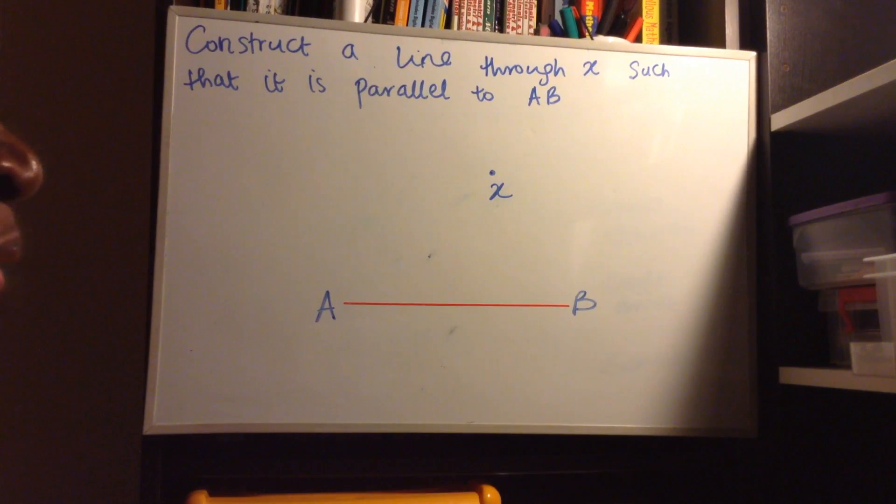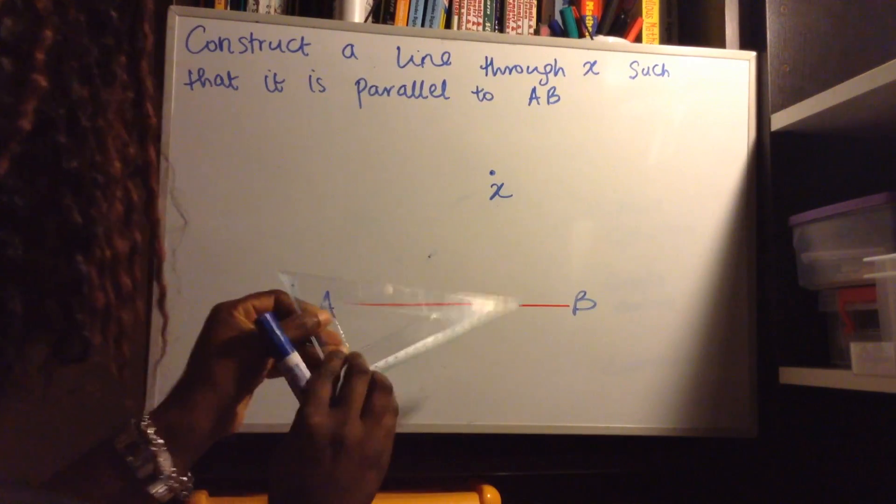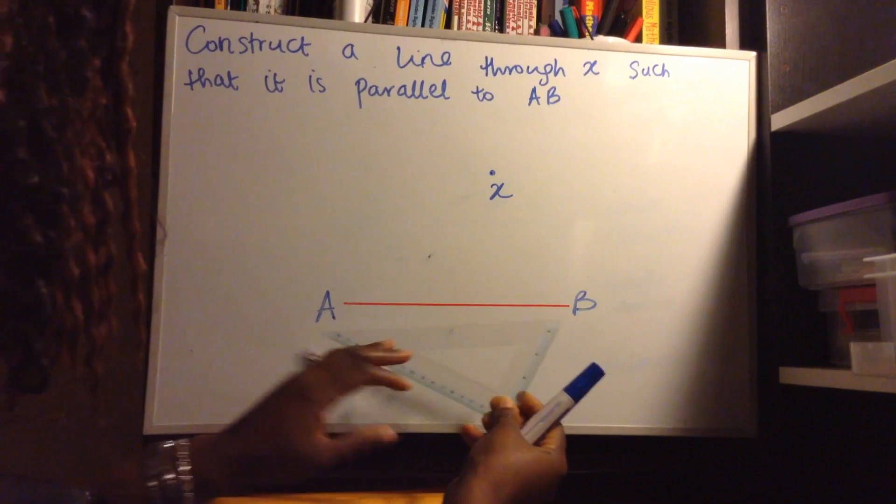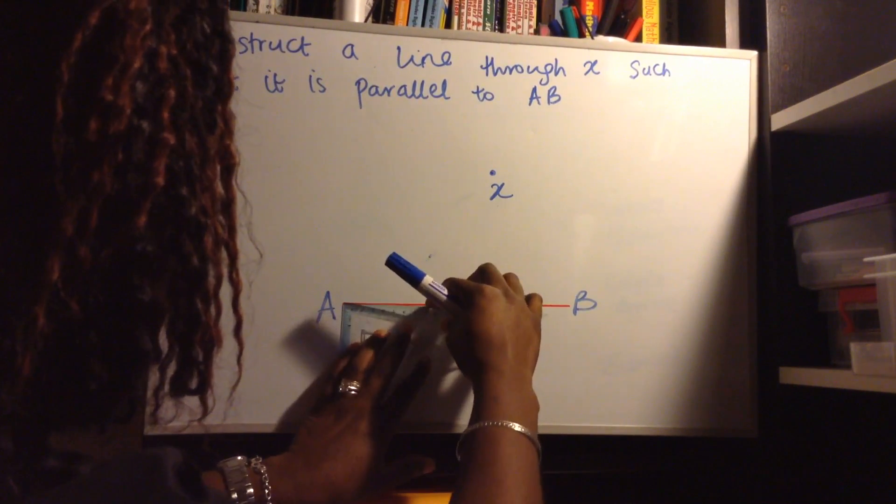What we need to do first of all is to place our set square on AB. So I am just going to place that there. It doesn't matter which way it goes. Do it this way.